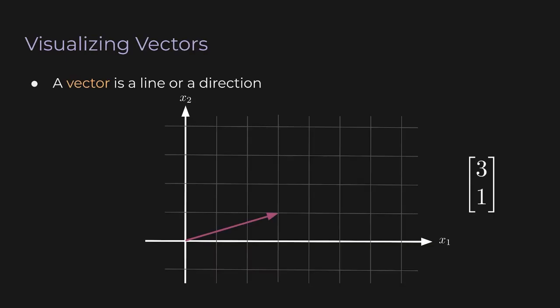We've gone over a lot of definitions, but let's take a moment to actually visualize vectors. A vector is basically a line or a direction. Here we have an example vector where the first entry is 3 and the second entry is 1. The horizontal axis is x1 and the vertical axis is x2. We have this pink arrow — the pointy part is called the head or tip, and the other side is called the tail. The vector takes you from the tail to the tip. Geometrically, you move along x1 by 3 and up 1 along x2.